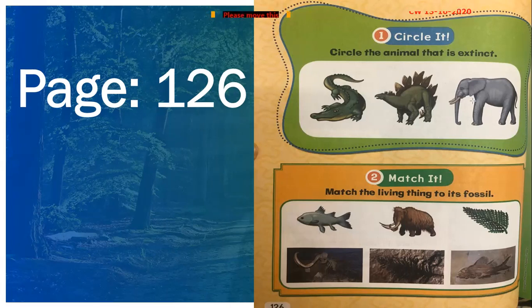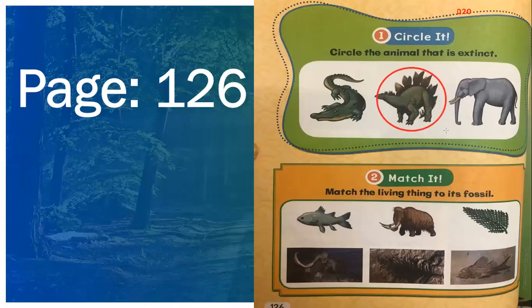The crocodile and the elephant are not extinct. What about the dinosaur? Is it extinct? Yes, it is extinct because it is no longer living. You cannot see them alive anymore. So circle the dinosaur.